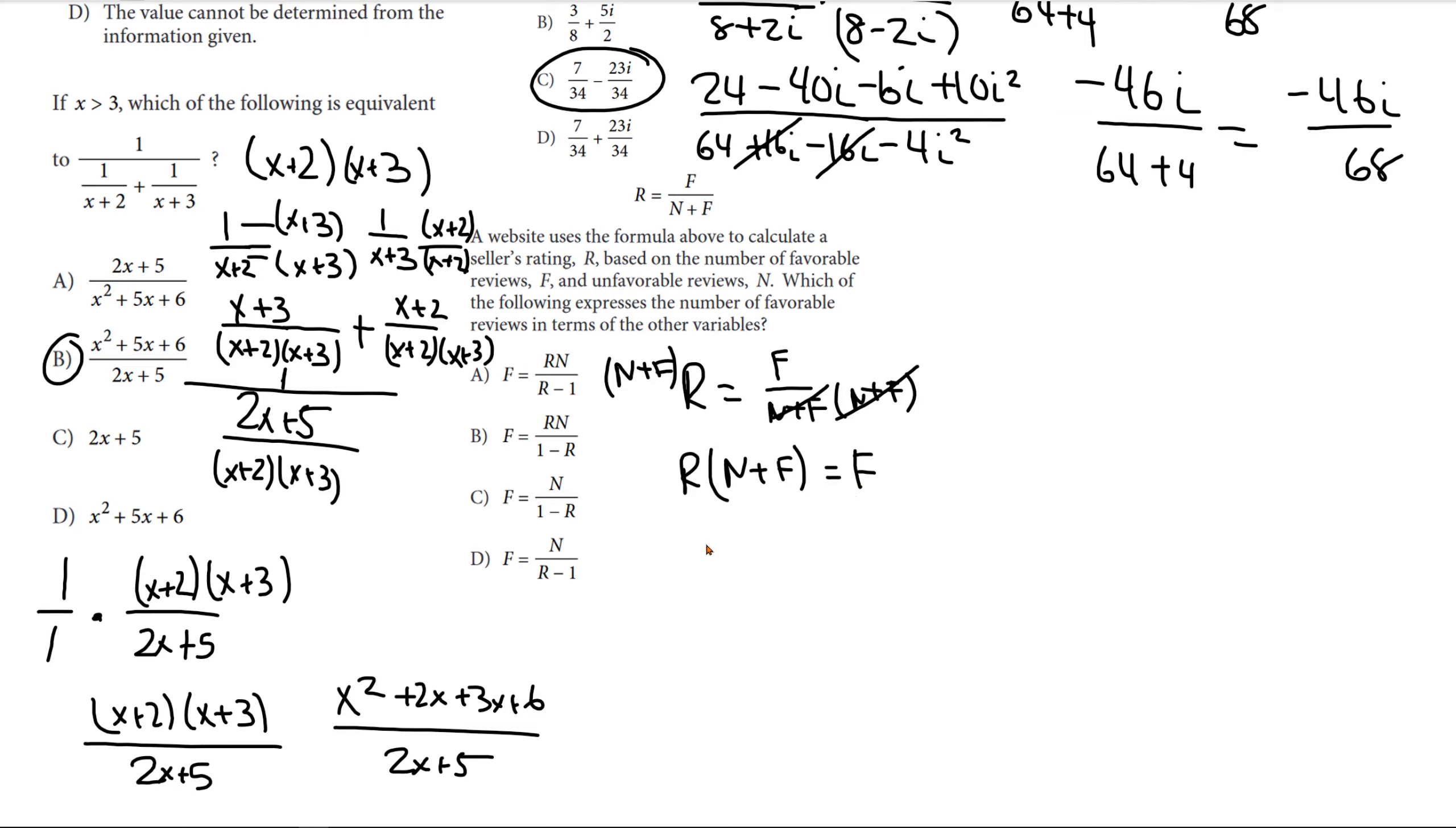And now, we must distribute. So, what we're left with is rn plus rf is equal to f. And now, we need to bring the f to one side. So, rn is equal to f minus rf. And now, here, what we can do is factor it out.